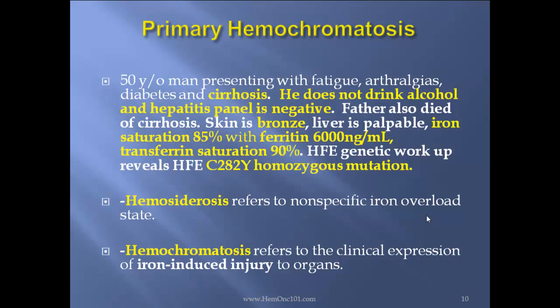Primary hemochromatosis case report: A 50-year-old man presenting with fatigue, arthralgias, diabetes, and cirrhosis. He does not drink alcohol and hepatitis panel is negative. Father also died of cirrhosis. Skin is bronze, liver is palpable, iron saturation 85%, ferritin 6000, and transferrin saturation 90%. The HFE genetic workup reveals HFE C282Y homozygous mutation — this is the key, the C282Y.